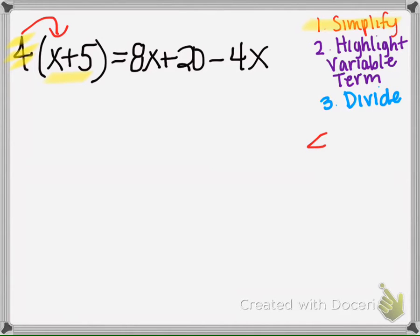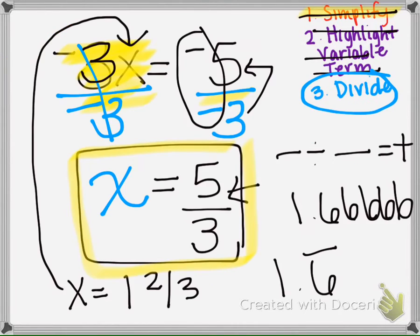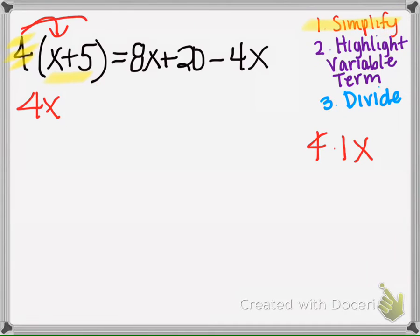So 4 times x, and remember we're multiplying the coefficients, so 4 times 1 is 4, so 4x, and then we have 4 times 5, which is 20, and we put plus 20 because it's positive.